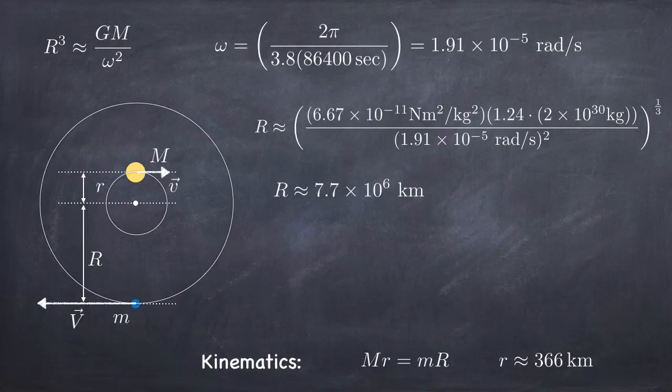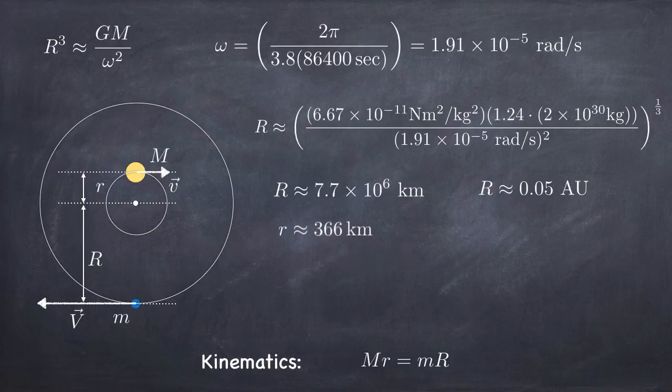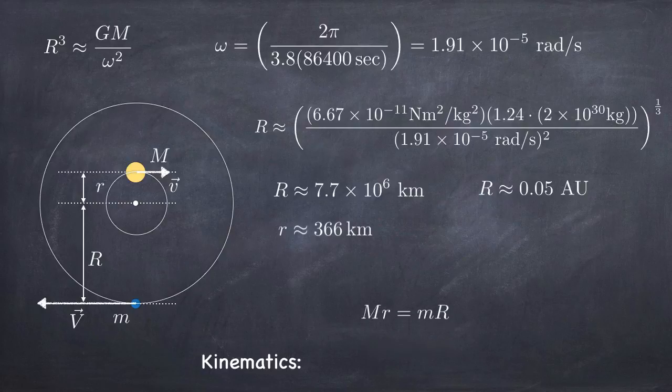Now that sounds like a lot until you remember that the distance between the earth and the sun is 150 million kilometers. So this actually works out only to be about five percent of an astronomical unit, the distance between the earth and the sun. So this planet is actually quite close to its star. But remember that the distance between the star and its center of mass is a mere 366 kilometers. So the star is much much closer to the center of mass than the planet.